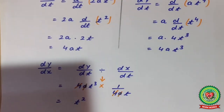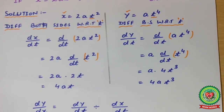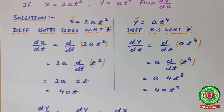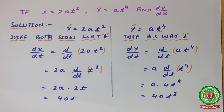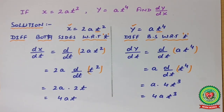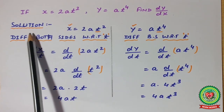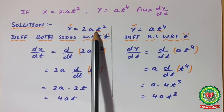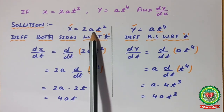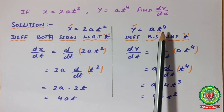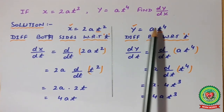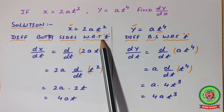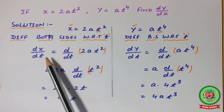Let me take an example. If x = 2at² and y = at⁴, and we have to find dy/dx. According to the first working rule, we write both in function form: x = 2at², y = at⁴. Since t is the common variable, we differentiate both sides with respect to t, giving dx/dt.